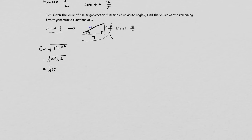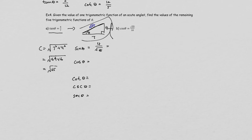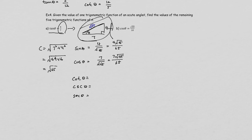With hypotenuse square root of 65: sine is 4 over square root of 65, rationalized to 4 square root of 65 over 65. Cosine is 7 over square root of 65, rationalized to 7 square root of 65 over 65. Tangent is given. Cotangent is the flip of tangent, which is 7 over 4. Cosecant flips sine to get square root of 65 over 4. Secant flips cosine to get square root of 65 over 7.